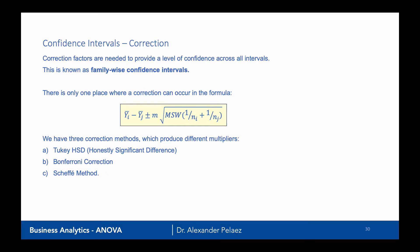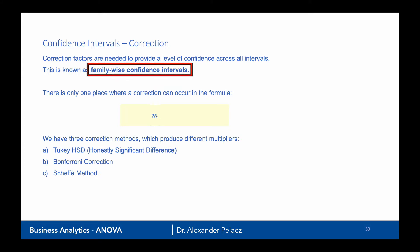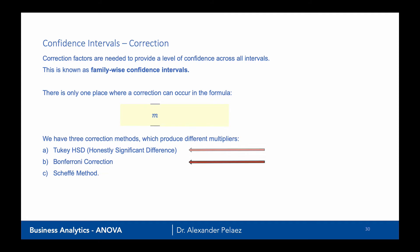To adjust for this, we focus on the correction factor m. We call these family-wise confidence intervals. There are three methods we will use: Tukey HSD (Honestly Significant Difference), the Bonferroni correction, and the Scheffé method. Each one will produce a different size confidence interval.